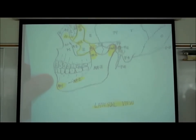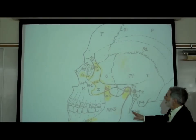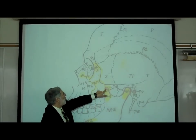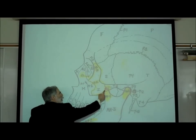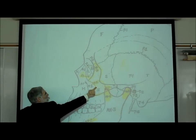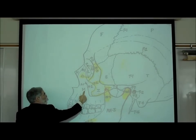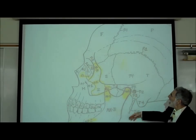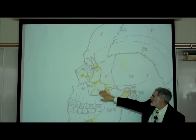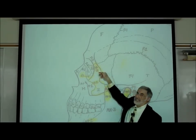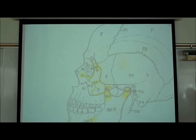On the lateral view, the zygomatic bone is labeled Z1, Z2, and Z3. Z1 is where the zygomatic bone attaches to the temporal bone — that's the temporal process of the zygomatic bone. Z2 is where it attaches to the maxilla — the maxillary process of the zygomatic bone. Z3 is where it attaches to the frontal bone — the frontal process of the zygomatic bone. We're simply identifying where the zygomatic bone attaches.